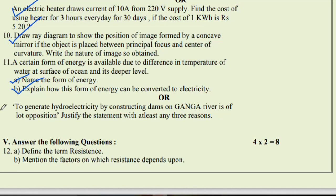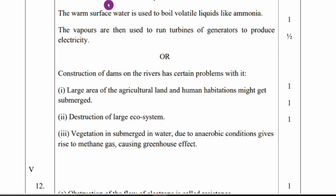To generate electricity by constructing dam on Ganga river is of lot of opposition. Justify the statement with at least any three reasons. One, large area of the agricultural land and human habitation might get submerged. Destruction of large ecosystem and vegetation submerged in water. Due to anaerobic condition gives rise to the methane gas causing greenhouse effect.